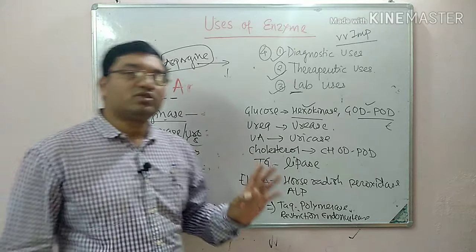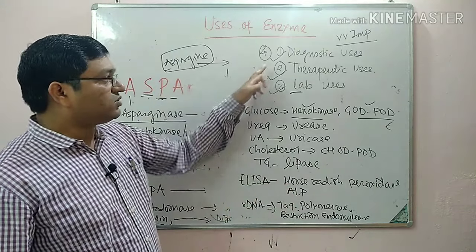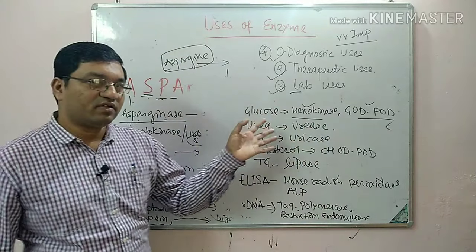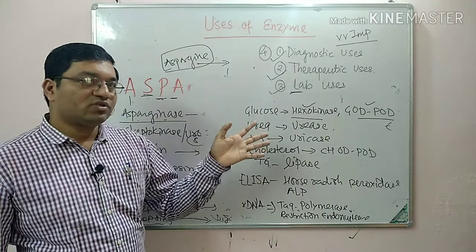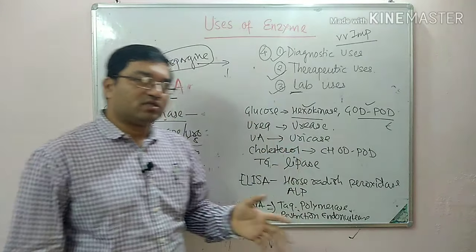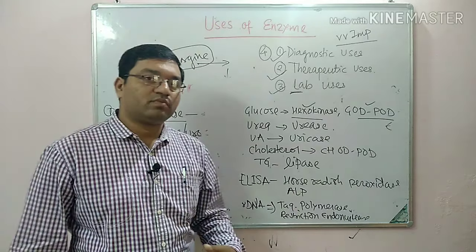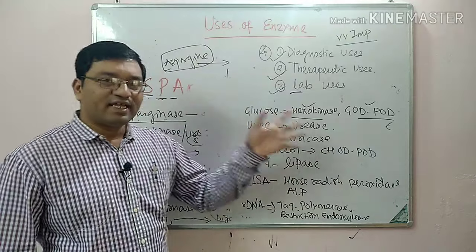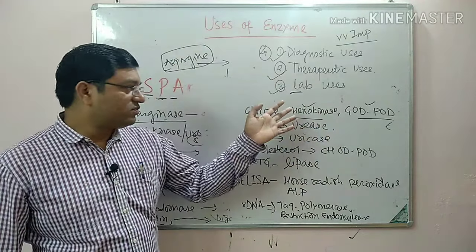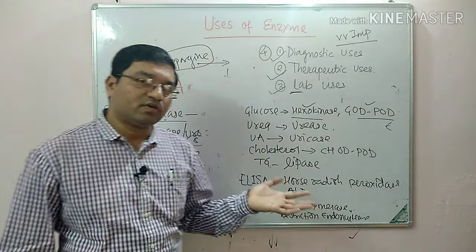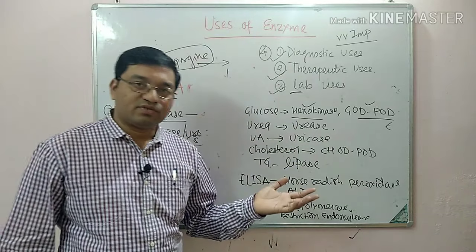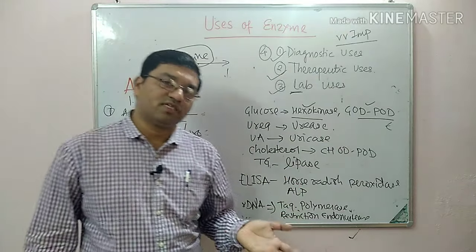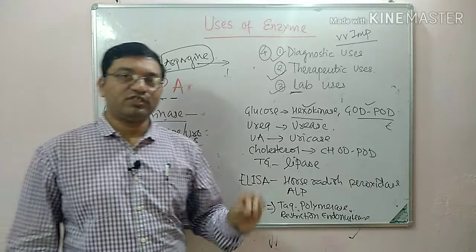This concludes the topic of diagnostic, therapeutic, laboratory, and industrial uses of enzymes. Industrial uses include renin in cheese preparation, enzymes in the preparation of high-fructose syrup, and various fermentation processes. These are the least important for exam purposes here. Thank you for watching.